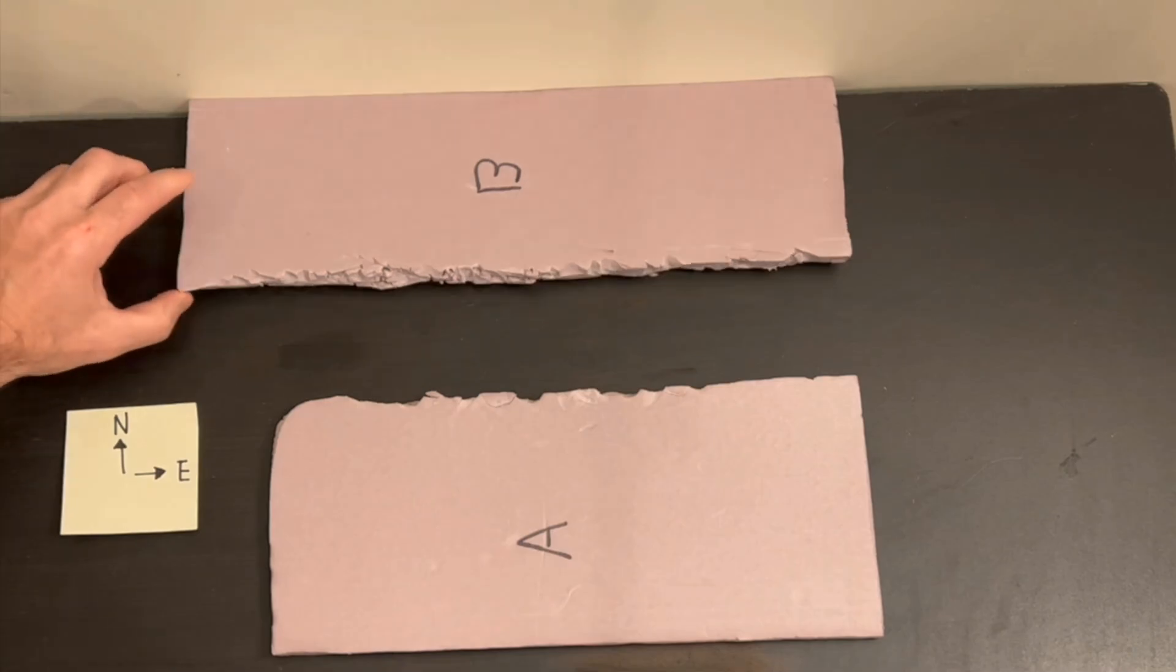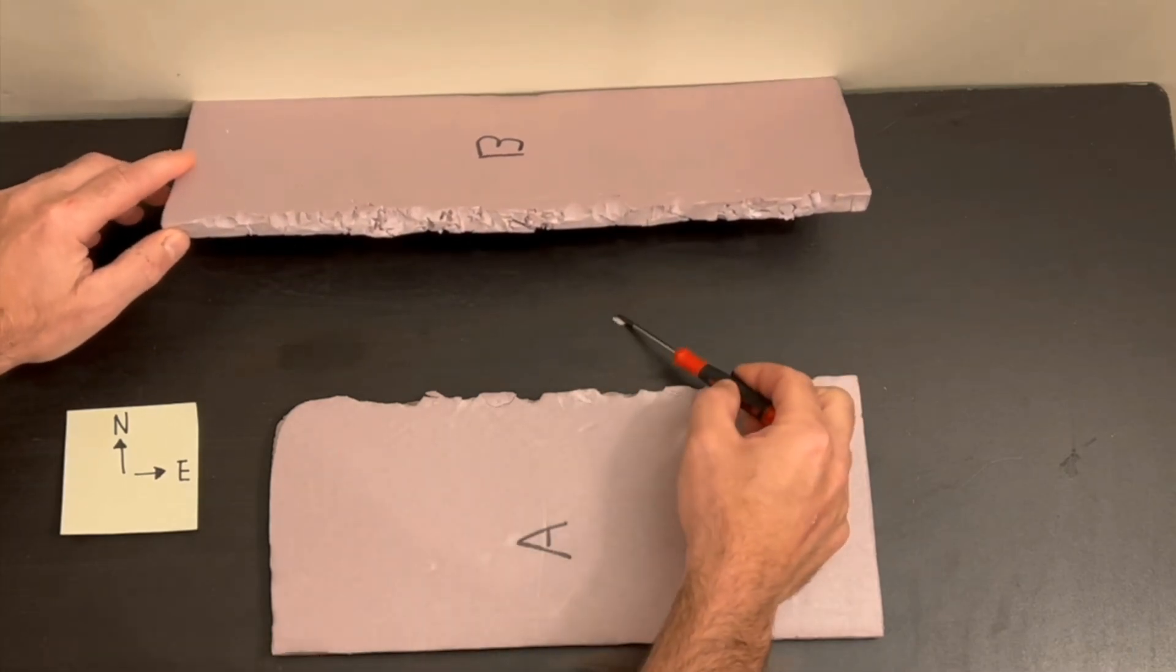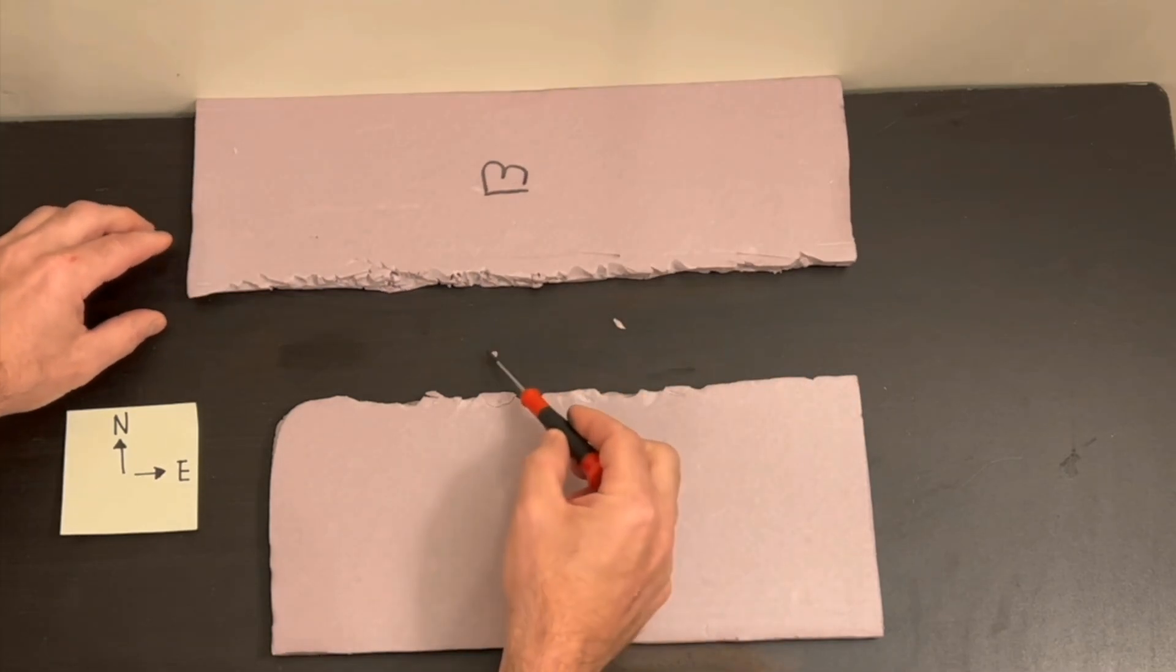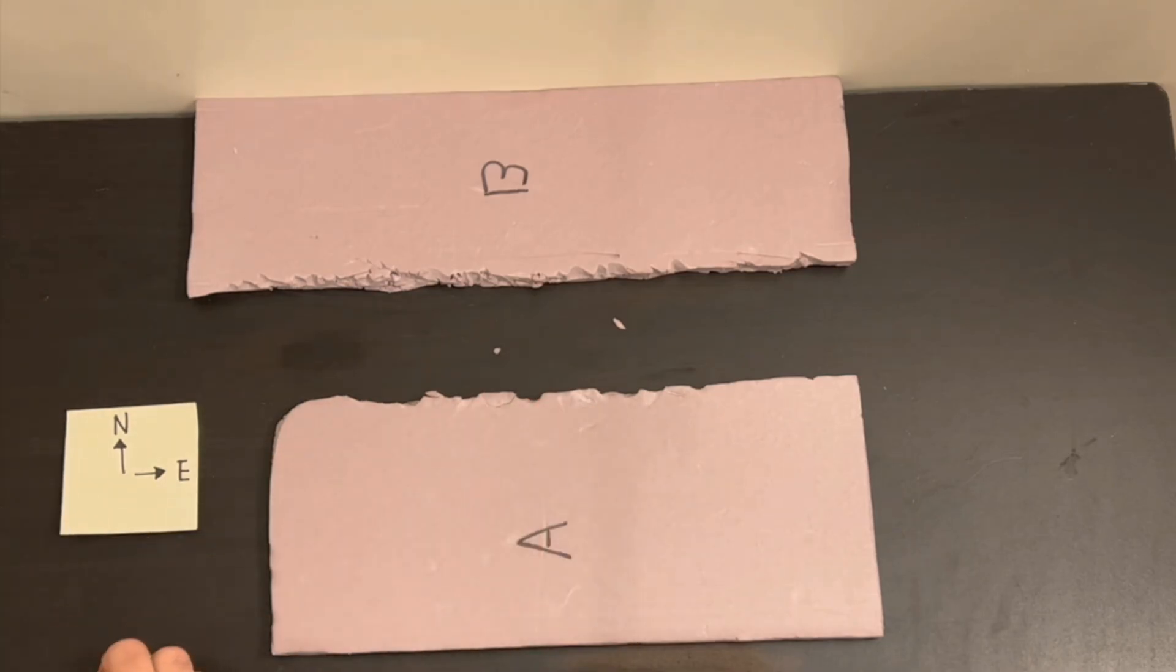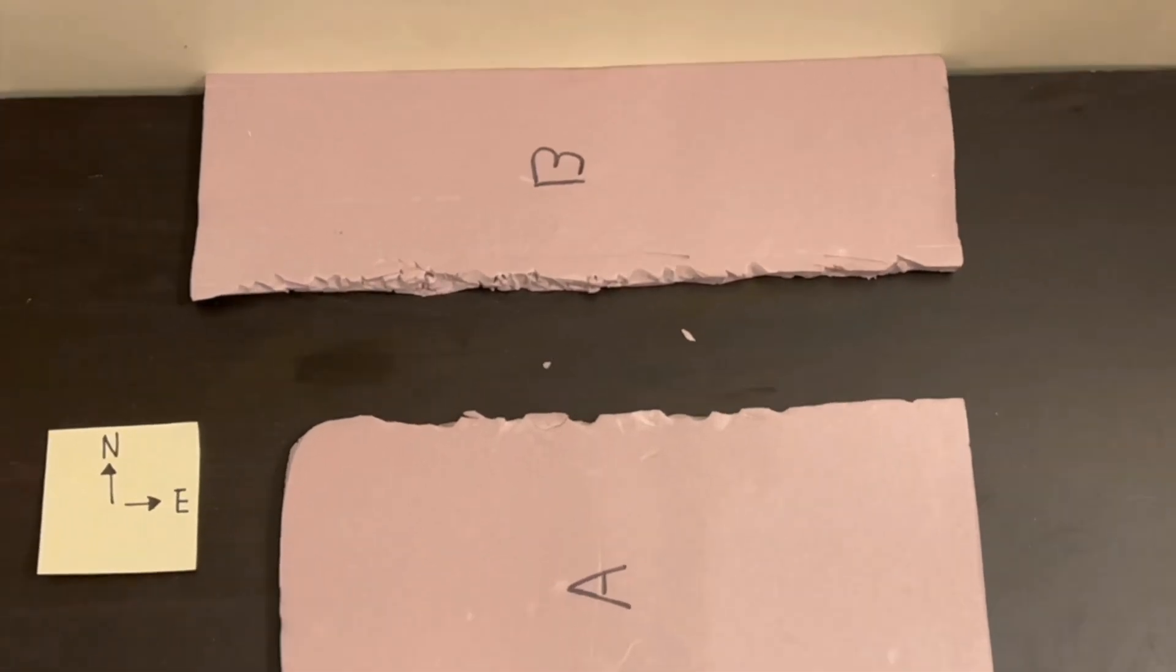Consider why these particular pieces of foam would have cracked and broken off apart from the larger piece of material they were attached to. What if anything was different about the matter at the locations where the matter broke off versus where it did not? What if anything was different about the forces acting on the matter at those locations?